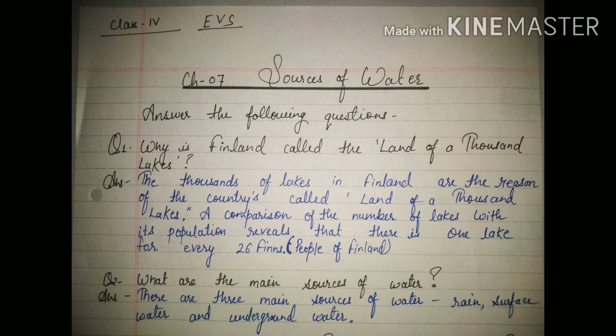Write today's date and chapter number 7 — Sources of Water — then put the heading: Answer the Following Questions. Question one: why is Finland called the land of a thousand lakes? Answer: Finland is called the land of a thousand lakes because it has thousands of lakes. A comparison of the number of lakes with its population reveals that there is one lake for every 26 Finns, meaning 26 people per lake.